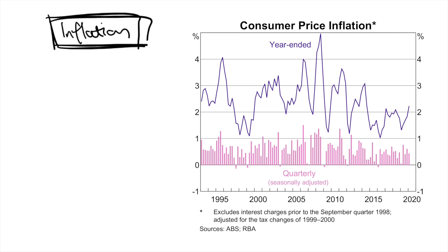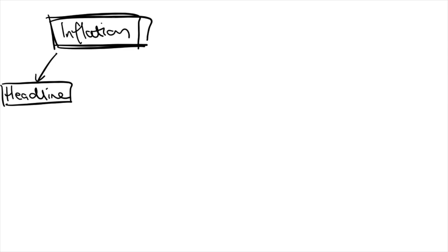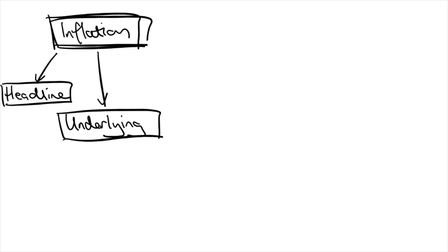The CPI is calculated by the Australian Bureau of Statistics and published once a quarter. From this figure, they calculate the headline rate of inflation. This measurement, however, is a bit flawed as it can be skewed by volatile or one-off price movements, such as changes in mortgage interest rates or natural disasters causing prices of bananas to increase. To take these into account, other measurements are used to indicate underlying inflation.